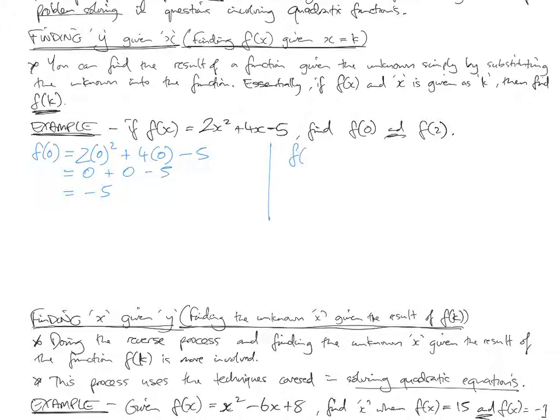And that's the first one out of the way. f of 2, so here we know what k is. k is given as 2, so that's what we're plugging into the function. The input into the function is going to be 2 this time. 4 times by 2, take 5. 2 squared is 4, times by 2 is 8, plus 4 times 2 is 8, take 5. 8 plus 8, 16, 11.